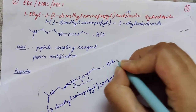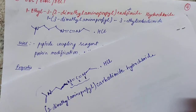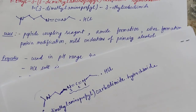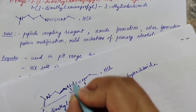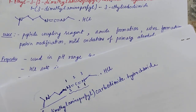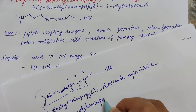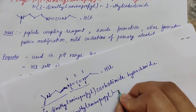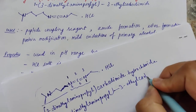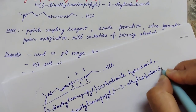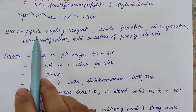An alternative accepted name places 3-dimethylaminopropyl on the first position and ethyl on the third position, giving 1-(3-dimethylaminopropyl)-3-ethylcarbodiimide hydrochloride. The uses of this reagent include peptide coupling, amide formation, ester formation, protein modification, and sometimes mild oxidation of primary alcohols.